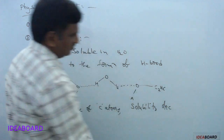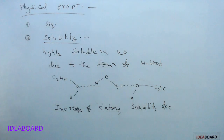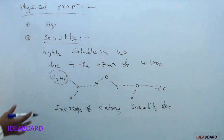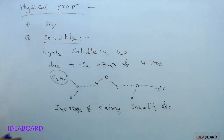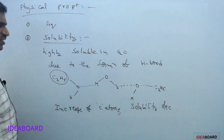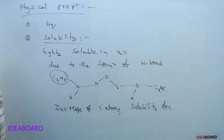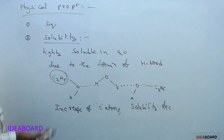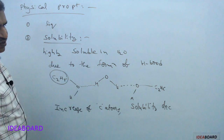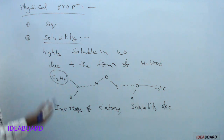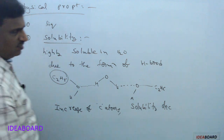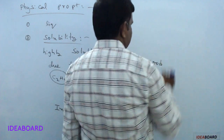However, with an increase in carbon atoms, solubility decreases because the hydrophobic part increases, which repels water molecules, and intermolecular hydrogen bonds also decrease. The first three alcohols — methyl alcohol, ethyl alcohol, and propyl alcohol — are mostly soluble; the remaining alcohols have decreasing solubility with increasing carbon atoms.